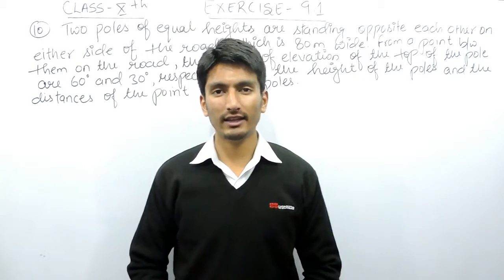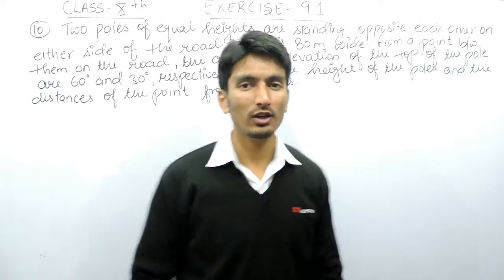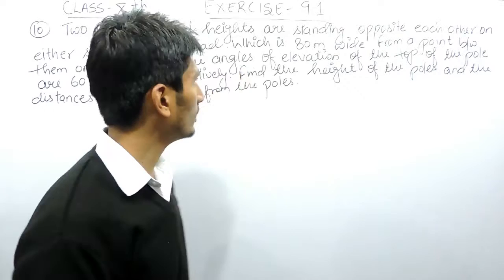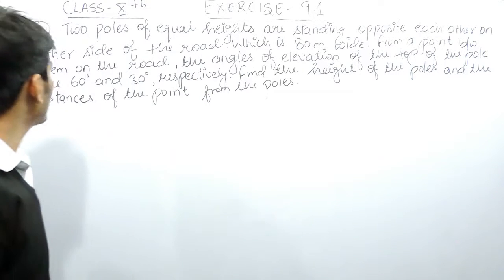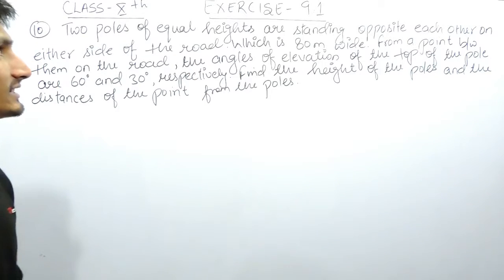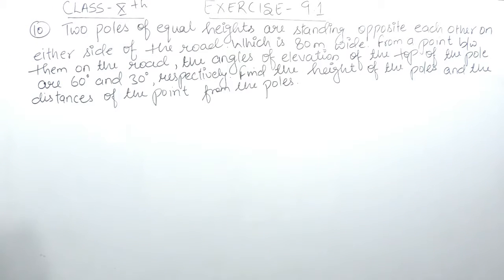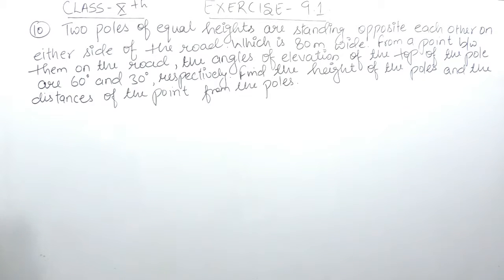We are from True Maths and in this video we are going to solve question number 10 of exercise 9.1. The question says: two poles of equal heights are standing opposite to each other on either side of a road which is 80 meters wide.